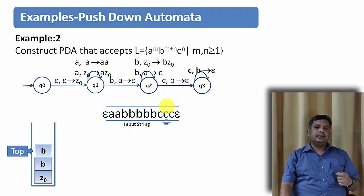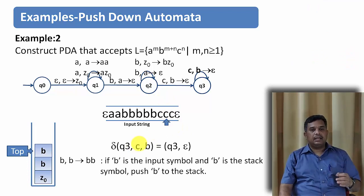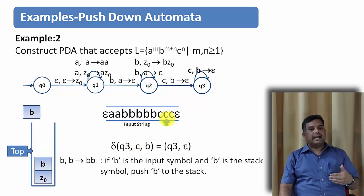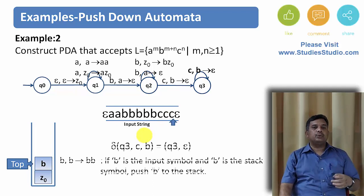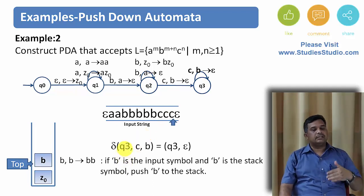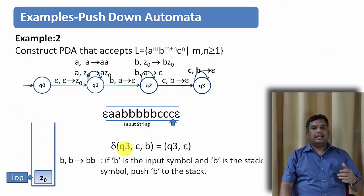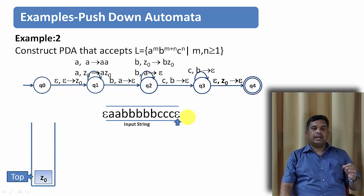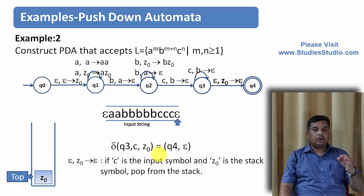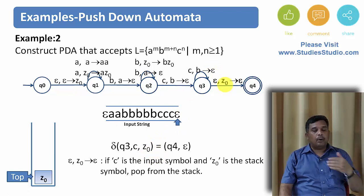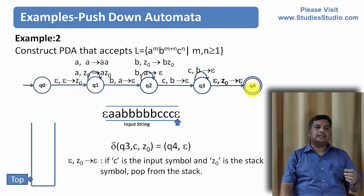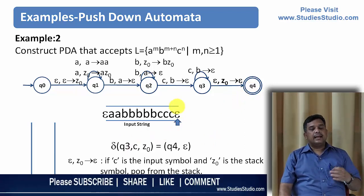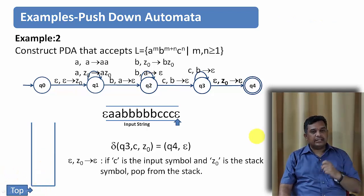The next input is another c: we pop the top of the stack, which is b. The next c does the same — we pop whatever is on top of the stack. The last symbol is epsilon; z0 is on top of the stack, so we pop z0 and go to the final accepted state. Nothing remains as input or on the stack, so the string is accepted. I hope you understood this.